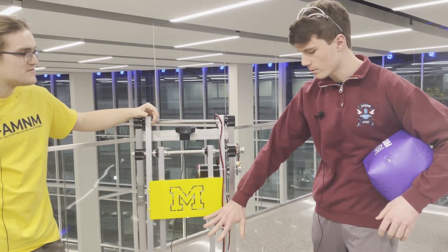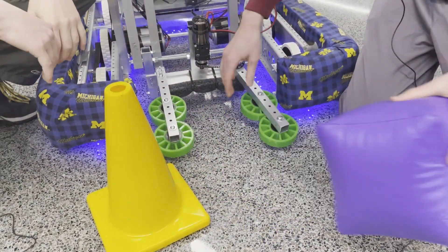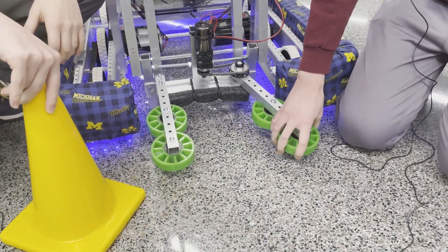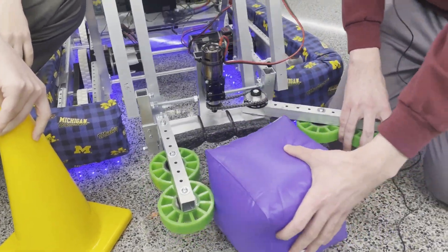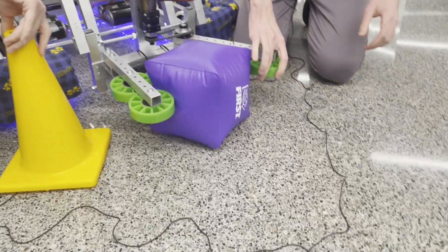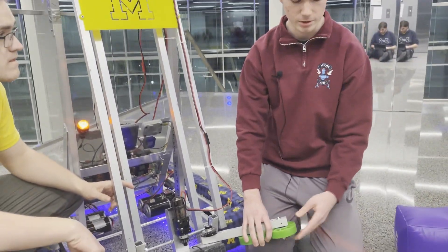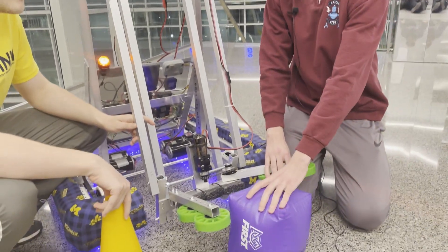Yeah, so on the end of our arm we have this claw mechanism to grip onto both the cubes and the cones. We have compliant wheels and this one single link to grab onto the game pieces. We chose compliant wheels because historically they're great at gripping onto things of weird shapes such as the cone, as well as this wider cube.